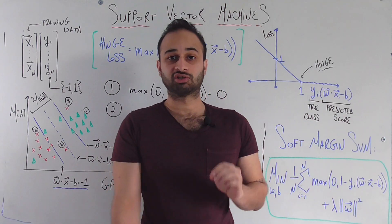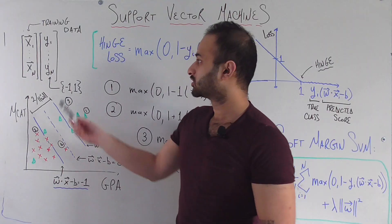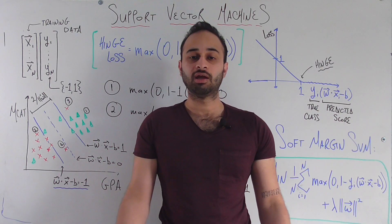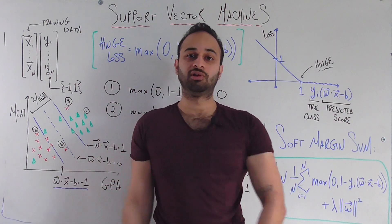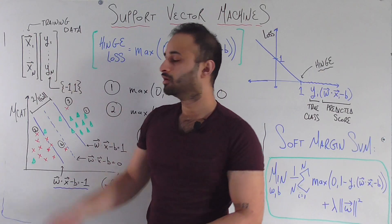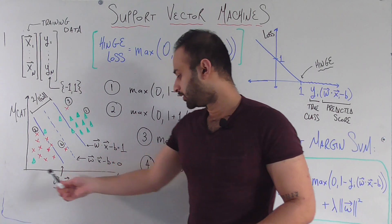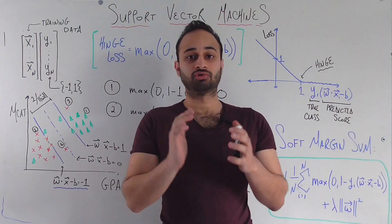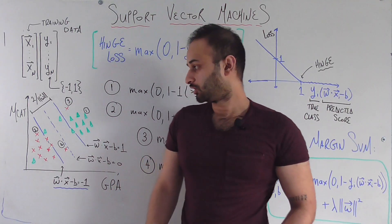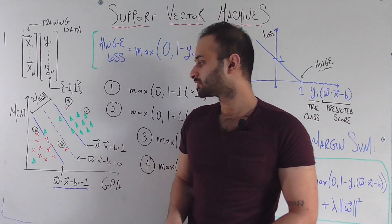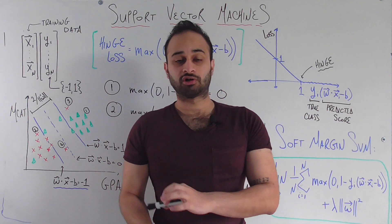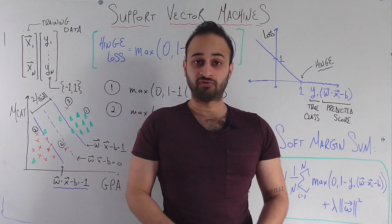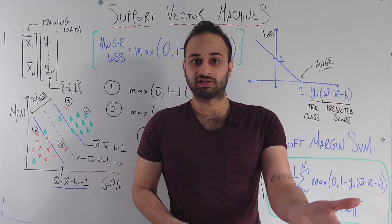The setup is that we're trying to predict whether or not a student gets into their top choice medical school. That response is given by y_i, a binary variable: negative one if they do not get in, and positive one if they do. To predict that, we use a vector of predictors x_i for each student. In two dimensions, we plot their GPA and MCAT, as in the previous video.